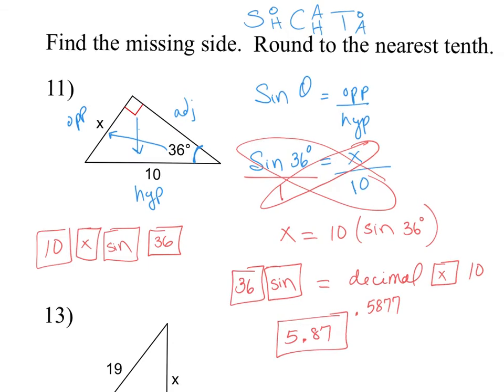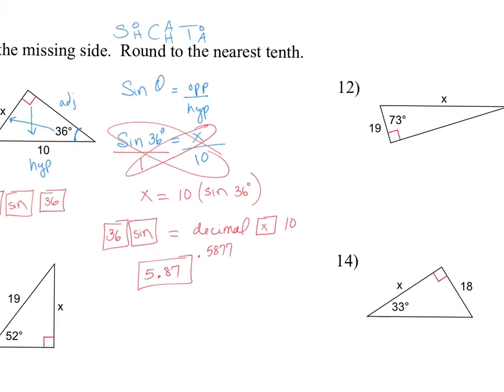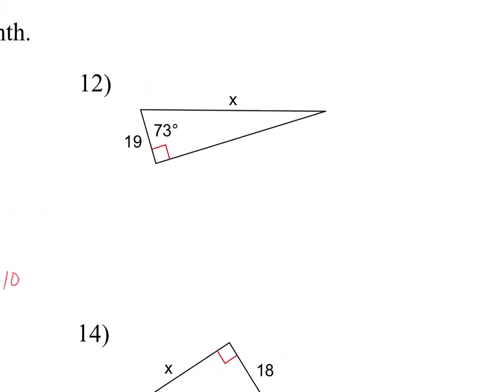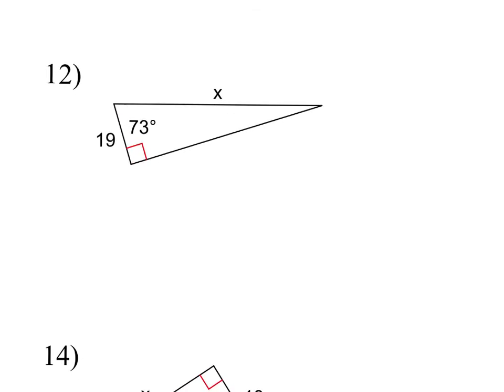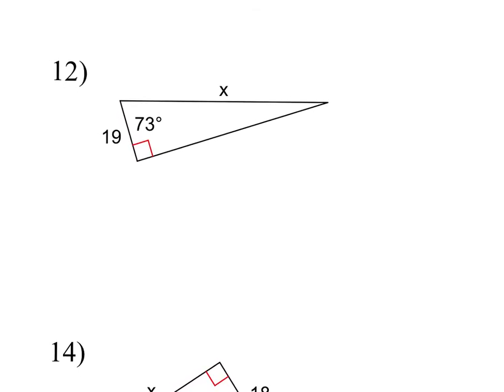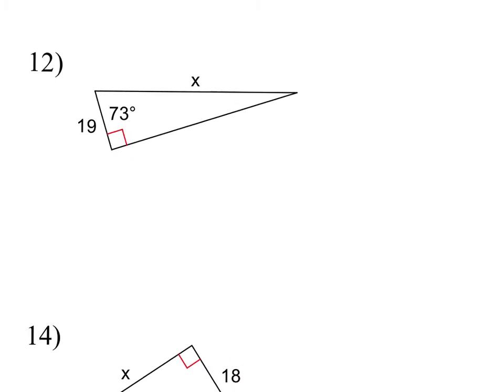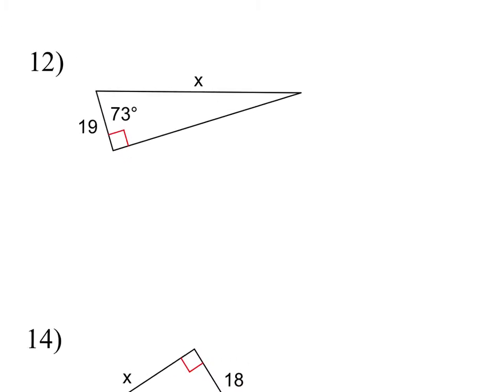Now, one other one I'd like to show you is when you're solving for a side length that happens to be in the denominator of our function. So in this particular case, here we have a 73 degree angle. If this is my angle, this is my opposite side. Here is my hypotenuse across from my right angle. And so this is my adjacent side.